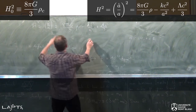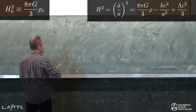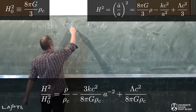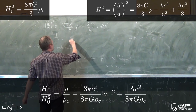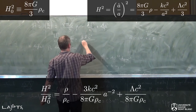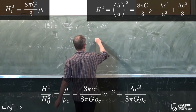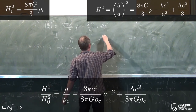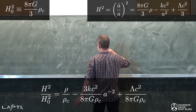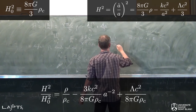La raison pour laquelle on introduit ça, c'est qu'on va prendre l'équation de Friedman-Lemaître, cette définition de ρ_C, et diviser l'une par l'autre pour introduire les notations qui nous intéressent. Je divise ce terme-là par H₀ et celui-là par 8πG sur 3 fois ρ_C, et on trouve H² sur H₀² est égal à ρ sur ρ_C, moins 3kc² sur 8πG ρ_C fois A⁻², plus λc² sur 8πG ρ_C.